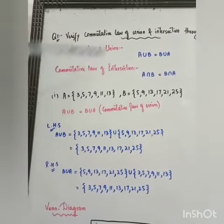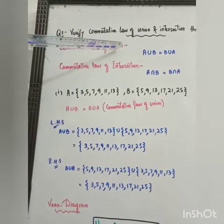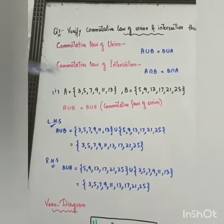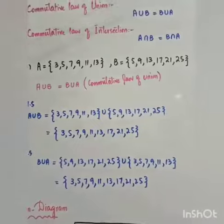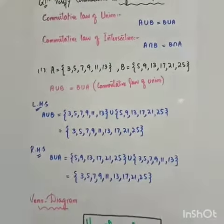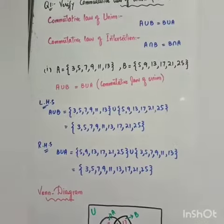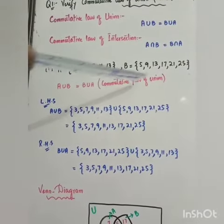Now we will have to prove these two laws. Set A is given, set B is given. First of all, we will derive commutative law of union.